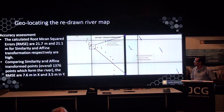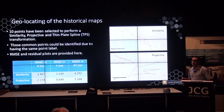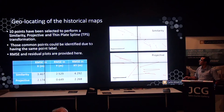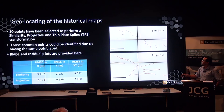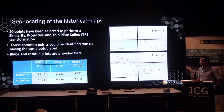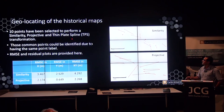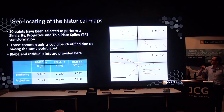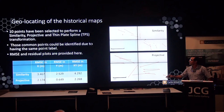The next step is geolocating the historical map. The historical map has labeled points, so we found 10 points that exist in the geolocated survey data and are also labeled in the historical map. Using these, three different geolocating techniques were applied in QGIS: similarity, projective, and thin plate spline. The residual from similarity is about 4 meters in x and y; projective is 2.2 meters. The error using thin plate spline is zero, because this method forces the points to be at exact positions in the reference system.